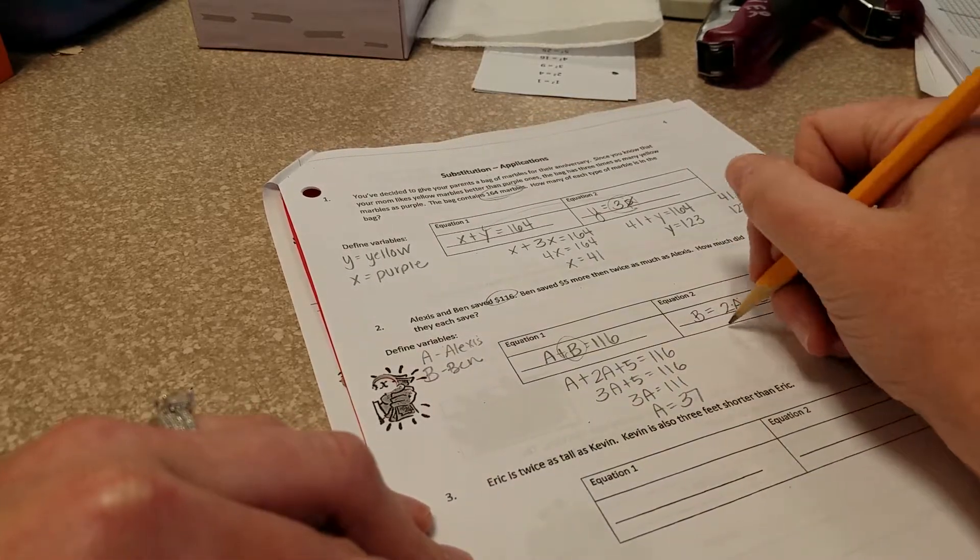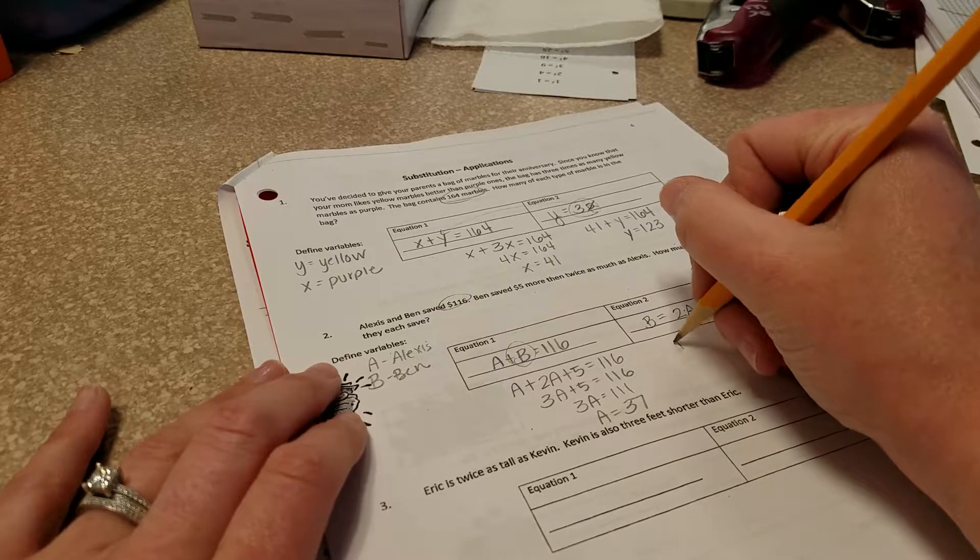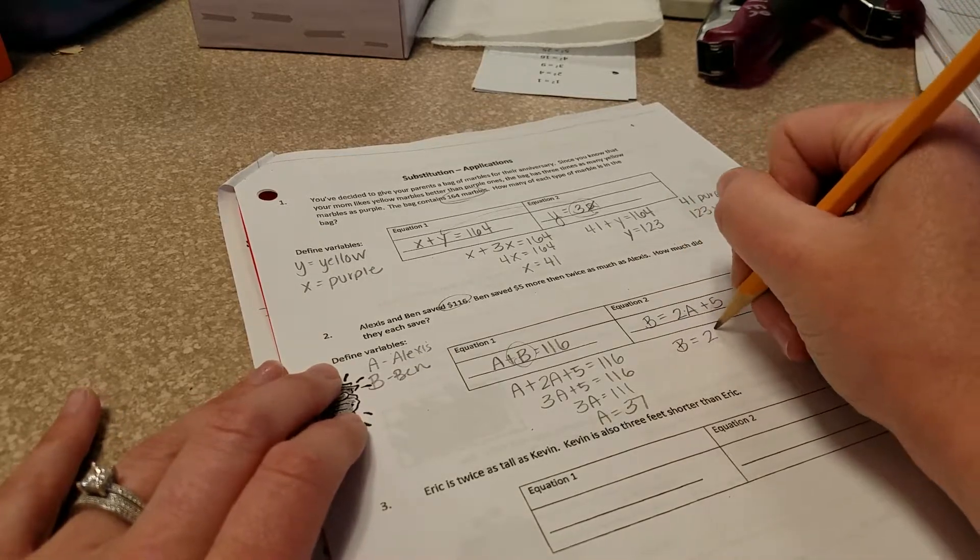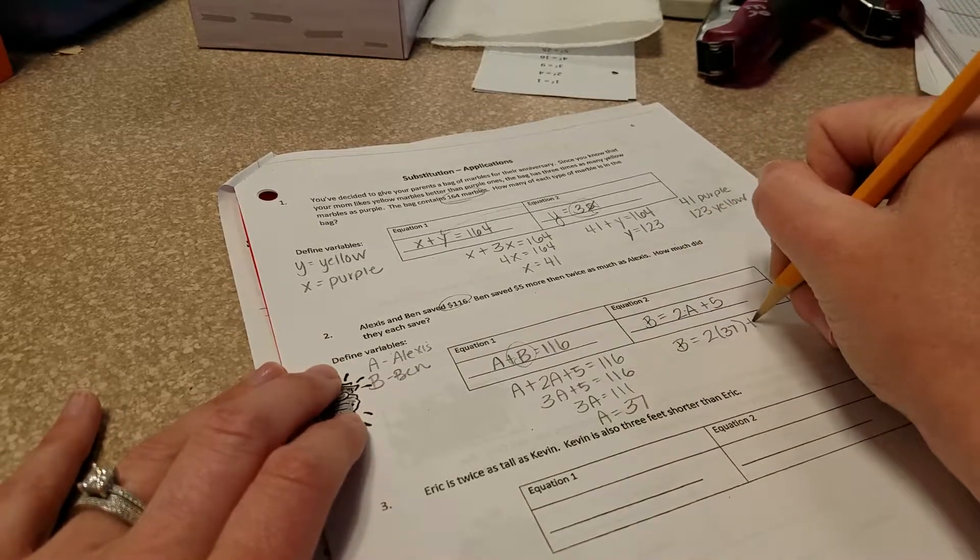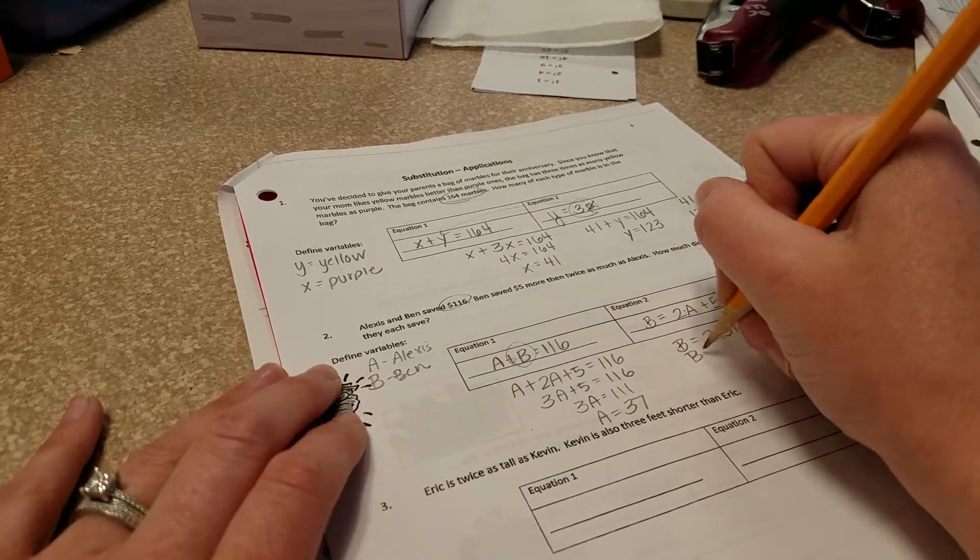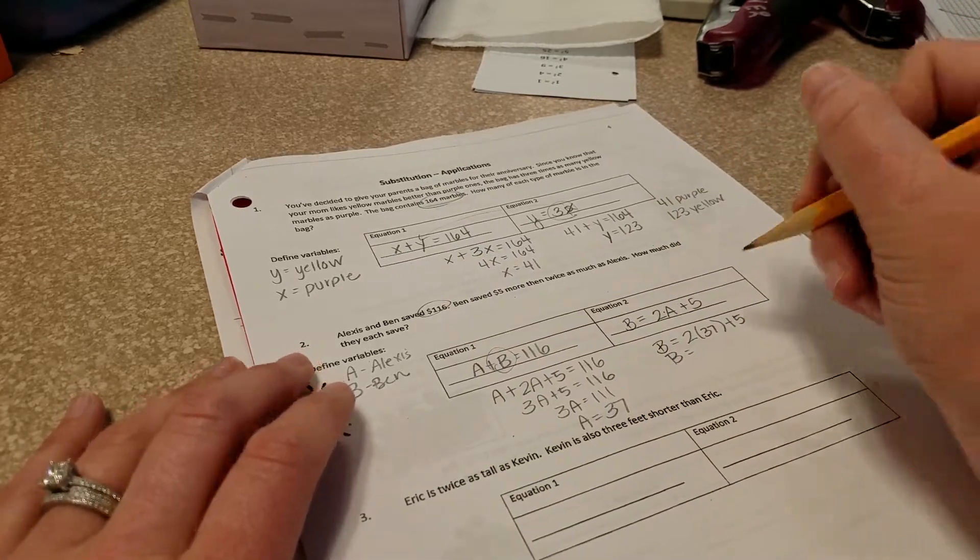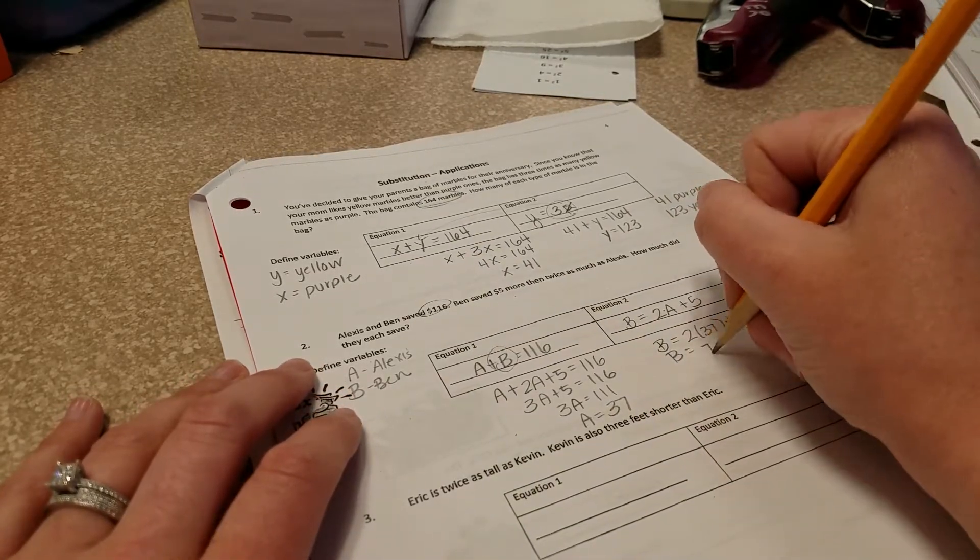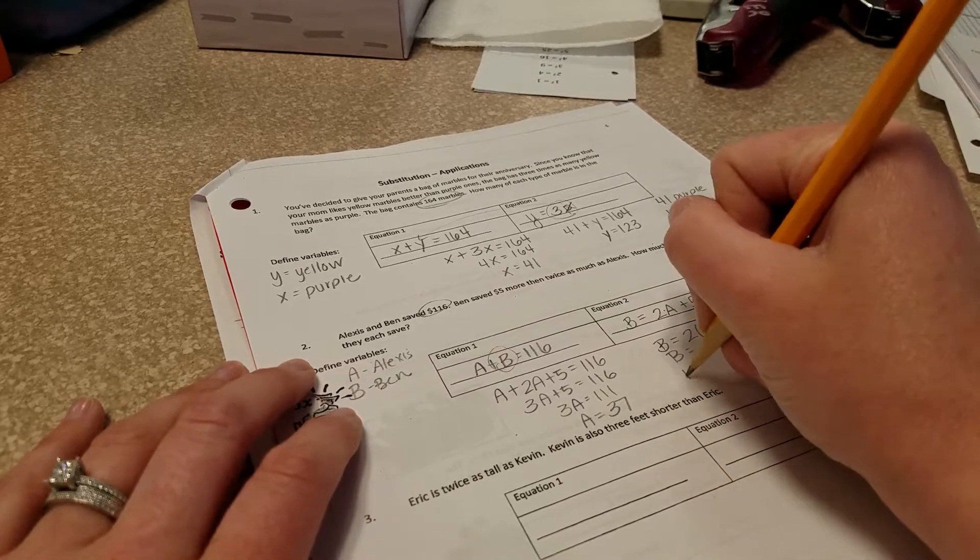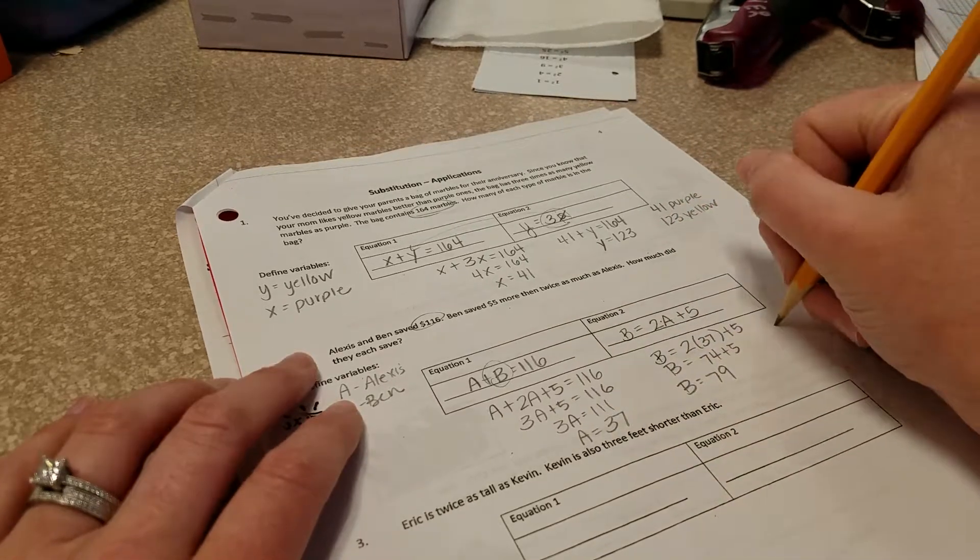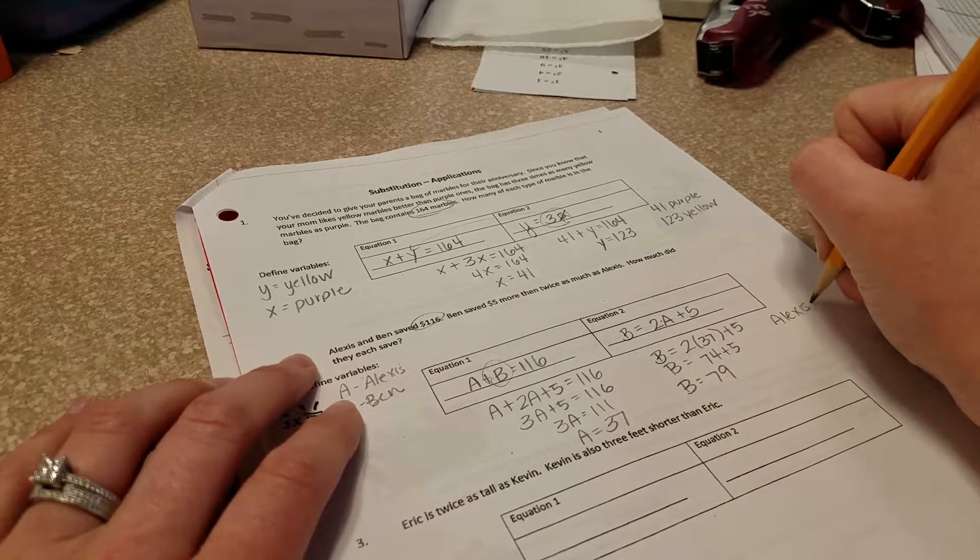We can use our second equation. We can actually use either equation, it doesn't matter. B equals 2 times the $37 plus the 5. So Ben saving 2 times 37 is going to give me 74 plus 5. So Ben had $79. So Alexis has $37 and Ben has $79.